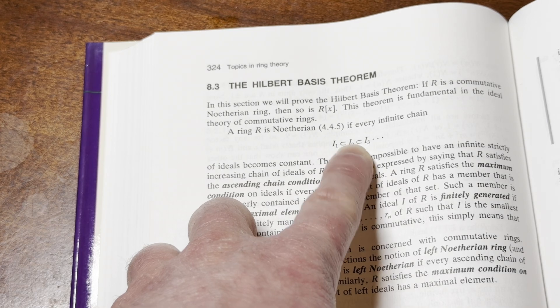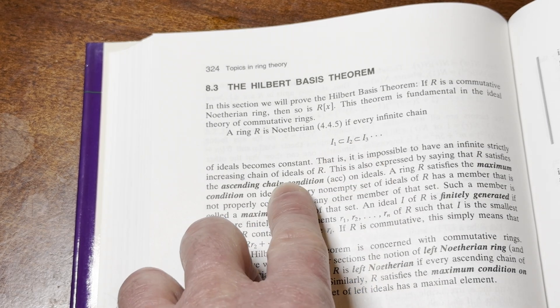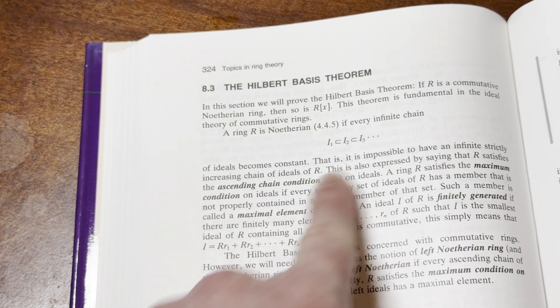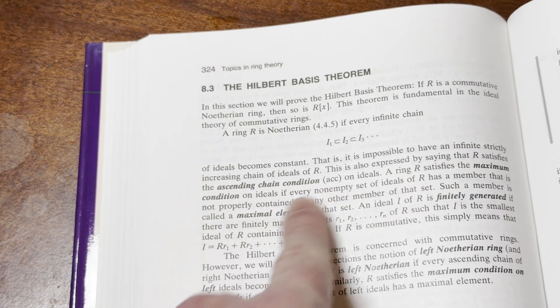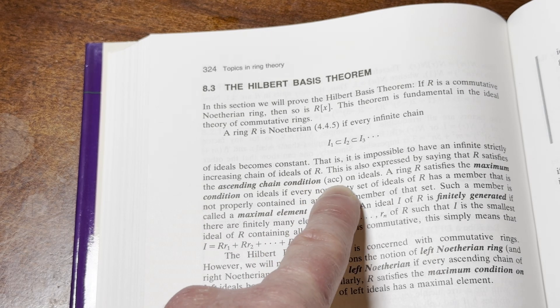Like I sub 1 is contained in I sub 2, which in turn is contained in I sub 3. Yeah. That is, it is impossible to have an infinite, strictly increasing chain of ideals of R. This is also expressed by saying that R satisfies the ascending chain condition, ACC, on ideals.